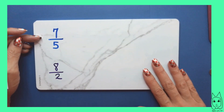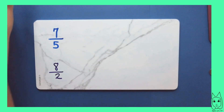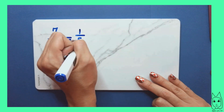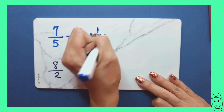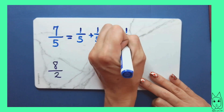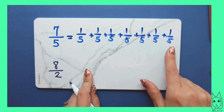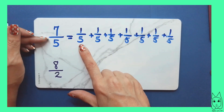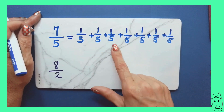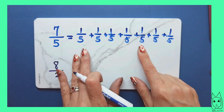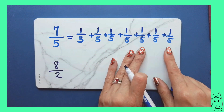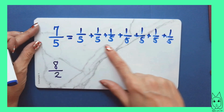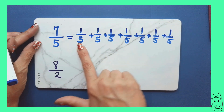We are going to do two examples together where we write the given fraction as a sum of unit fractions. For this first one, we have seven fifths. The sum would be one fifth written seven times. One fifth is representing the unit fraction — each of those parts. If I have one fifth plus one fifth plus one fifth plus one fifth plus one fifth, that's already a whole, because I only needed five equal parts. But then I have two more fifths, which is why the numerator is larger than the denominator. Writing it as a sum of unit fractions, you would have one fifth written seven times.